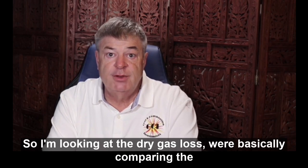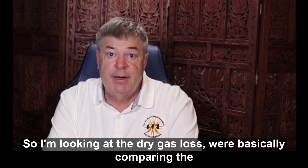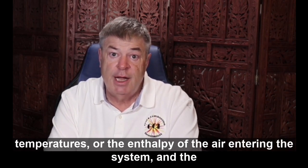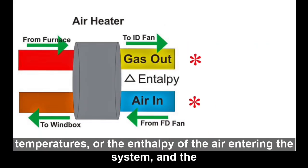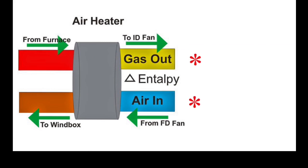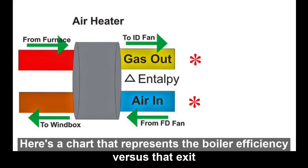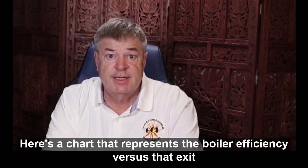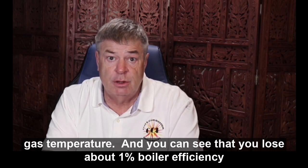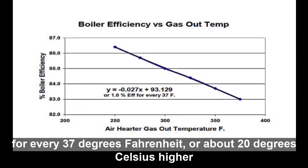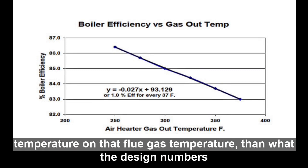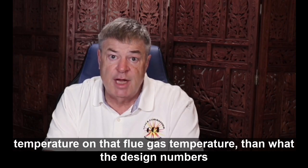Looking at the dry gas loss, we're comparing the enthalpy of air entering the system and gas leaving the system. A chart of boiler efficiency versus exit gas temperature shows you lose about one percent boiler efficiency for every 37 degrees Fahrenheit — or about 20 degrees Celsius — increase in flue gas temperature above design numbers.